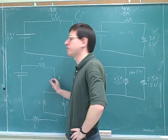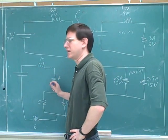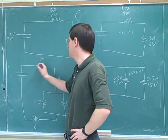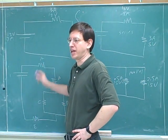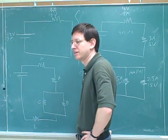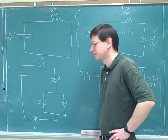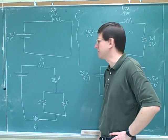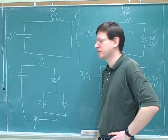Because anything that goes through here is forced to go through B, and anything that goes through B is forced to go through A. So A and B would be in series.